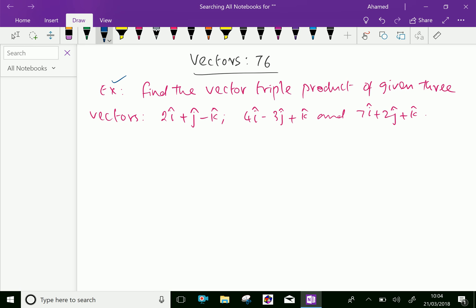Example: find the vector triple product of given three vectors: 2i plus j minus k, 4i minus 3j plus k, and 7i plus 2j plus k.